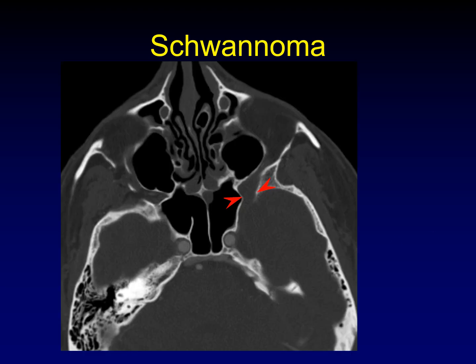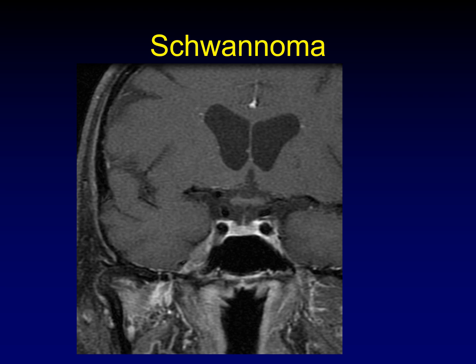Another way schwannomas can mimic perineural spread is by widening foramina — here we see widening of the foramen rotundum as a V2 schwannoma passes through. We also talked about how perineural spread can expand spaces such as the cavernous sinus or Meckel's cave; schwannomas can do this too. Here Meckel's cave is expanded just as you would expect for perineural spread, with a small amount of tumor heading down expanding V3 as well. This expansion of Meckel's cave is a classic finding of perineural spread, but here is attributable to a schwannoma of the fifth cranial nerve.